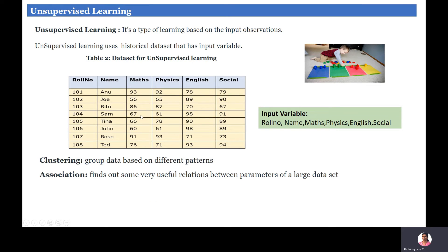For unsupervised learning, in the previous slide there was a supervisor column named 'problem solving.' In unsupervised learning, there is no supervisor in the dataset. The techniques identify patterns on their own and improve the task without a labelled decision attribute.